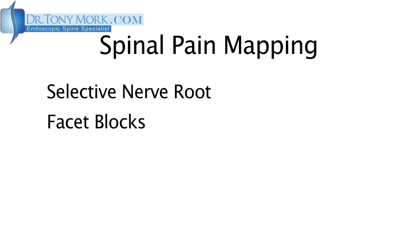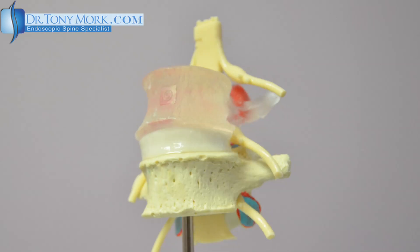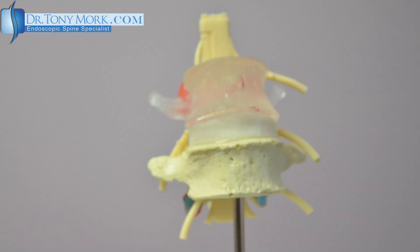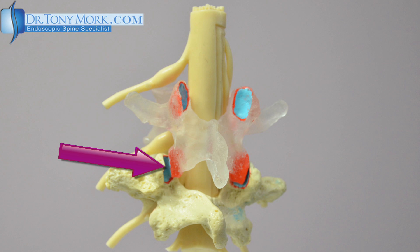The second type of spinal pain mapping block is facet blocks. Facets are the guiding joints in the back of the spine and these cause back or neck pain a little off the midline. What you can see here is if we put a little Novocaine where the purple arrow is into the facet joint, this could actually temporarily remove the pain. If that was successful, then we could implicate the facet joint as causing that particular type of pain, and we could suggest a procedure to remove this pain on a permanent basis.